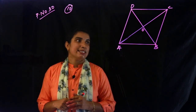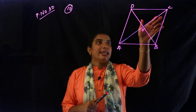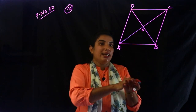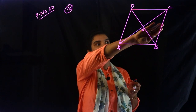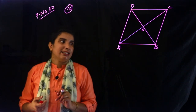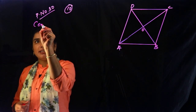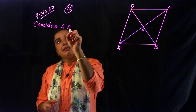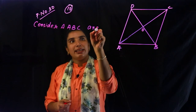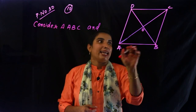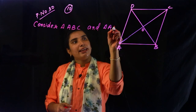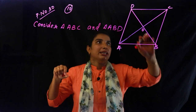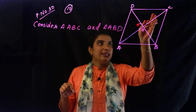Now we are going to consider the two diagonals and the triangles formed. Consider triangle ABC and triangle ABD. These two triangles are considered.